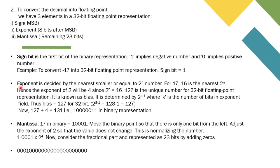The exponent is decided by the nearest smaller or equal power-of-2 number. For 17, the value 16 is the nearest 2^n number, so the exponent of 2 is 4, since 2^4 = 16. Here, 127 is the unique number for 32-bit floating point representation, known as bias, determined by 2^(k−1) where k is the number of bits in the exponent field. Thus bias = 127, and 127 + 4 = 131, which is represented as 10000011 in binary.